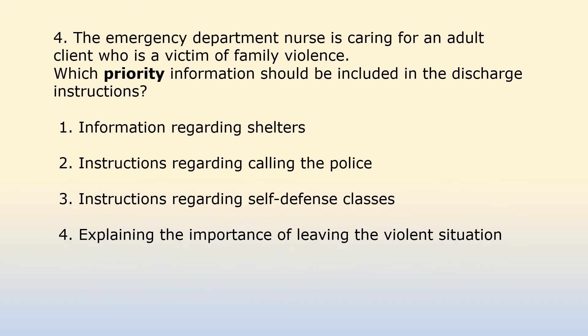The emergency department nurse is caring for an adult client who is a victim of family violence. Which priority information should be included in the discharge instructions? Option 1: Information regarding shelters. Option 2: Instructions regarding calling the police. Option 3: Instructions regarding self-defense classes. Option 4: Explaining the importance of leaving the violent situation.